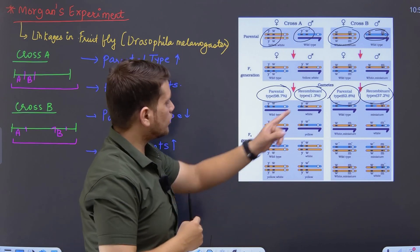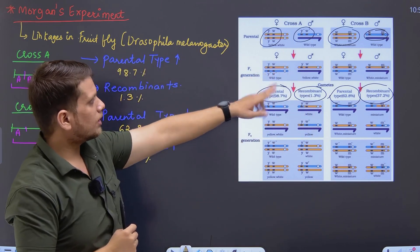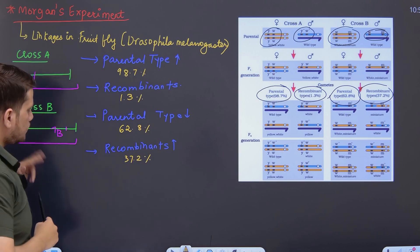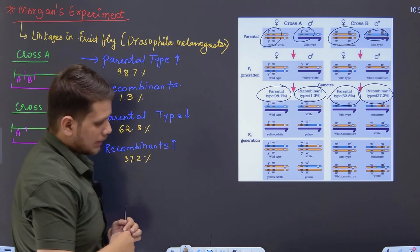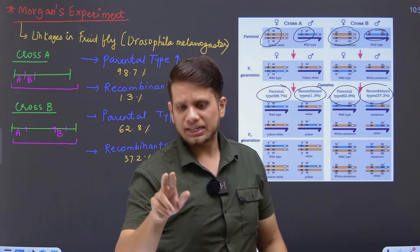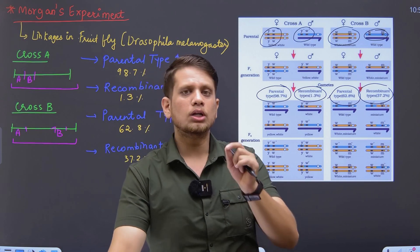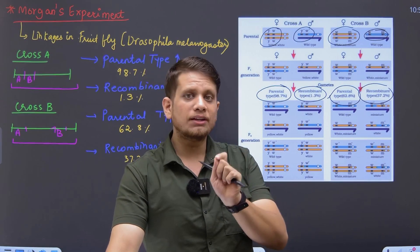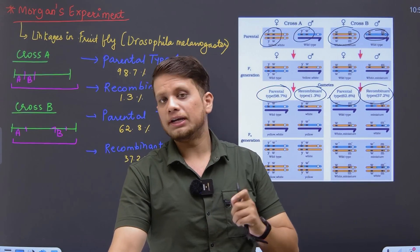So when we talk about the recombinants, when the genes are very far, it is 37.2 in case of cross B, and parental is 62.8. Now, Morgan was that scientist who actually talked about something which was very different from the law of independent assortment.